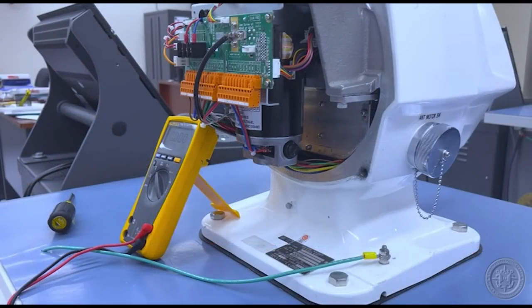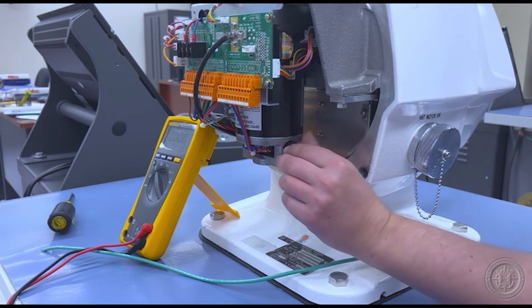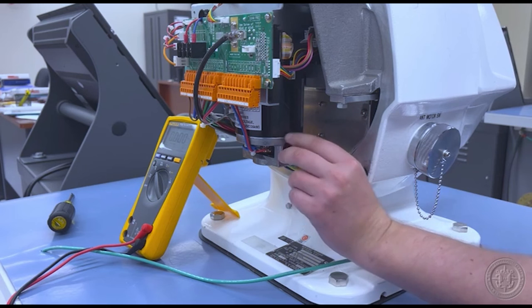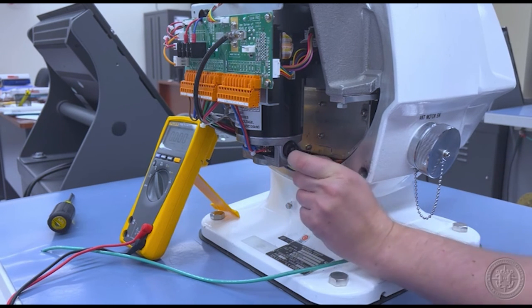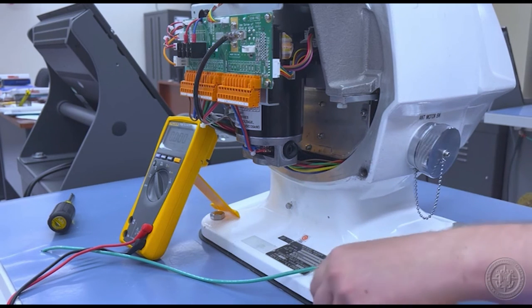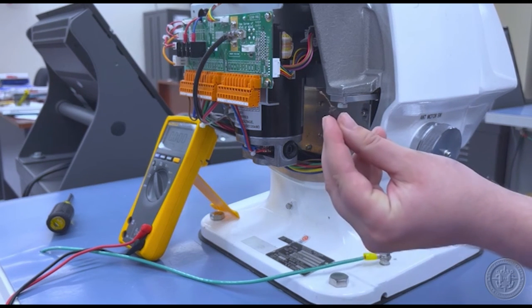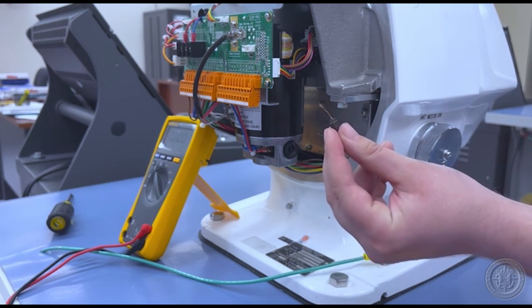Step 5 is localizing the trouble to the circuit. Let's see if our possibilities from step 4 are present within the circuit. Upon an inspection, I can see that the motor brush is damaged.